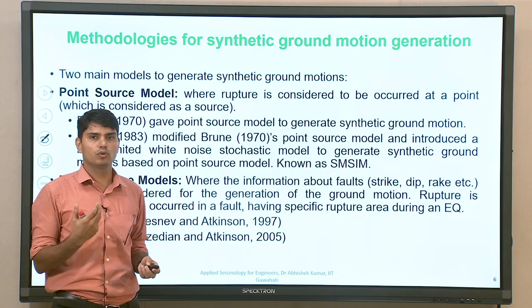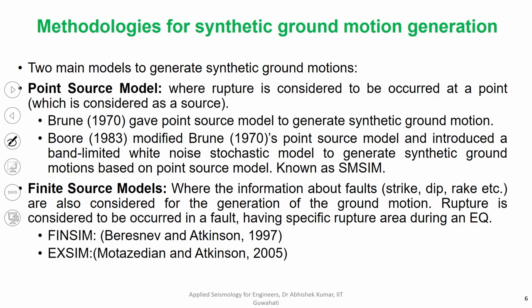In terms of methodology, generally we have two models or two ways in which models work. One is the point source model, where the entire process of rupture is happening just at one point. Brune in 1970 proposed this point source model to generate synthetic ground motion, where the entire phenomenon of earthquake occurrence was limited to a single point. Later on, Brune's point source model of 1970 was modified by Boore in 1983, who introduced band-limited white noise.